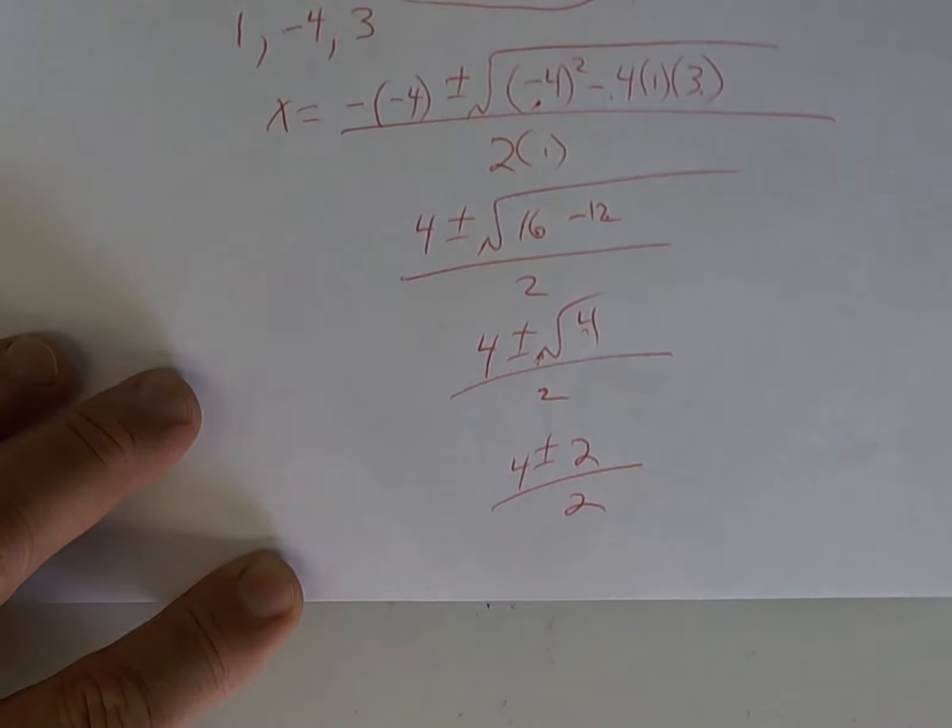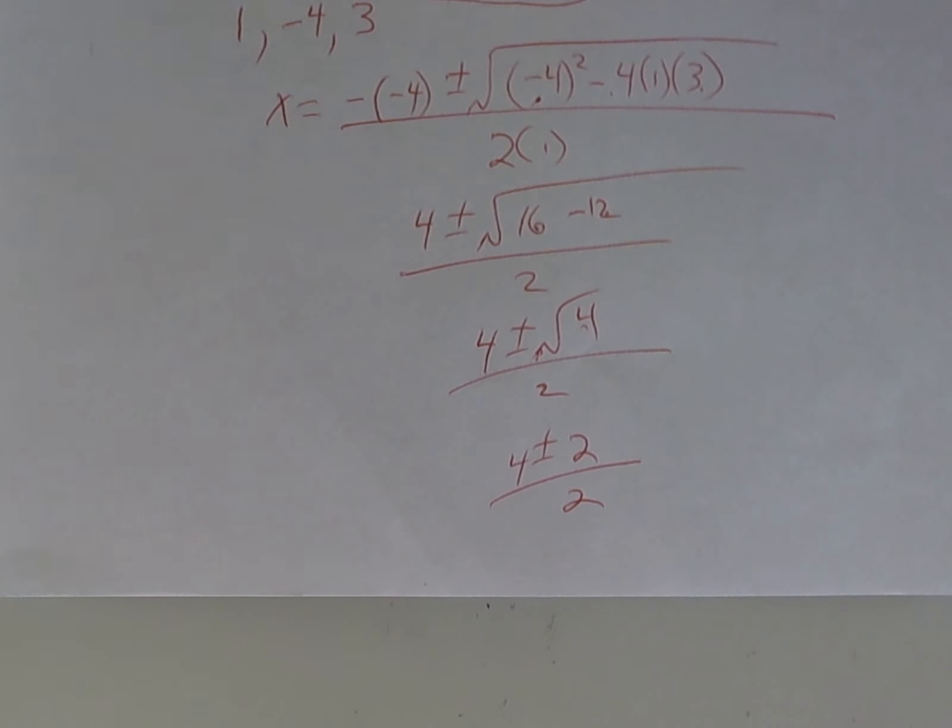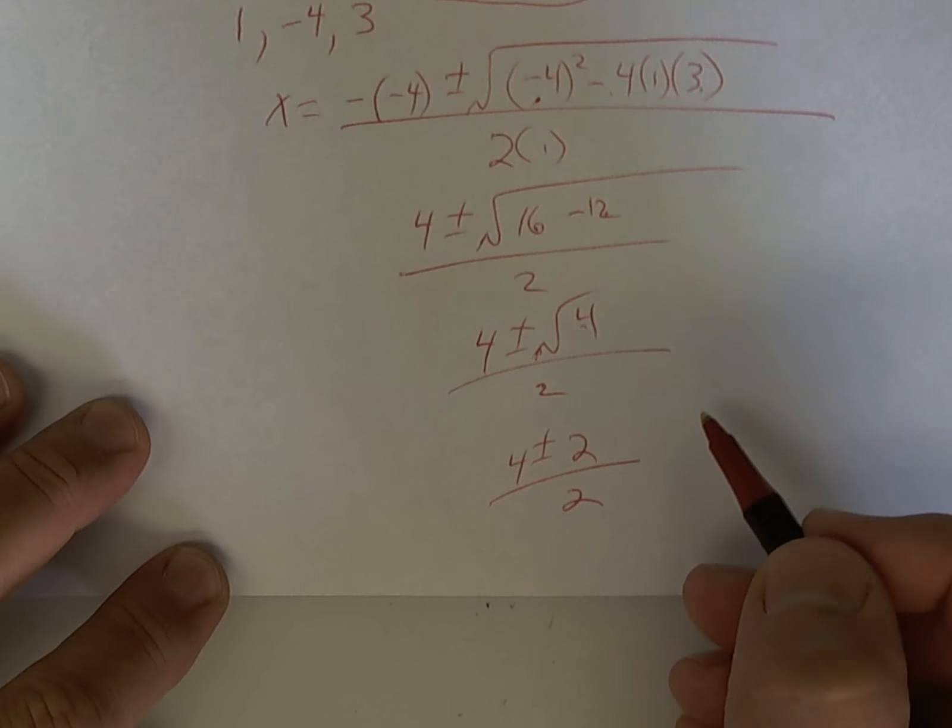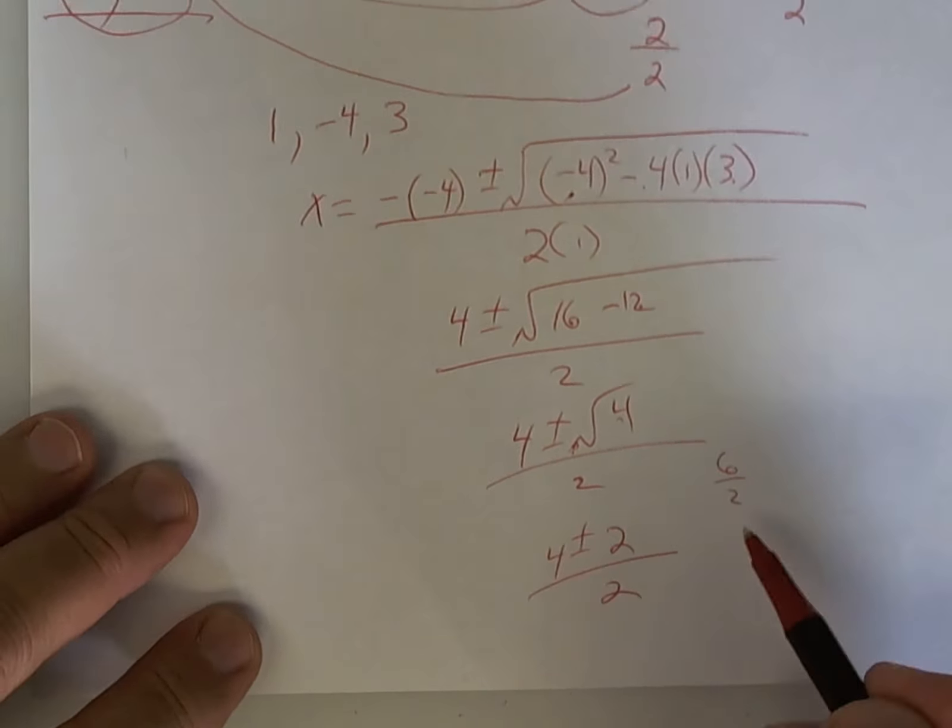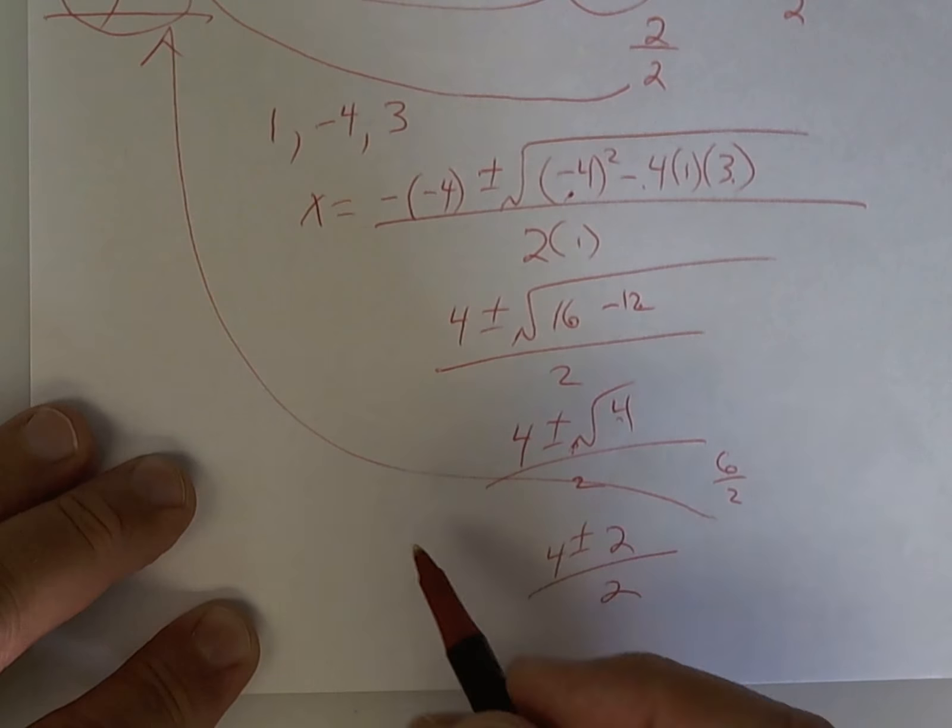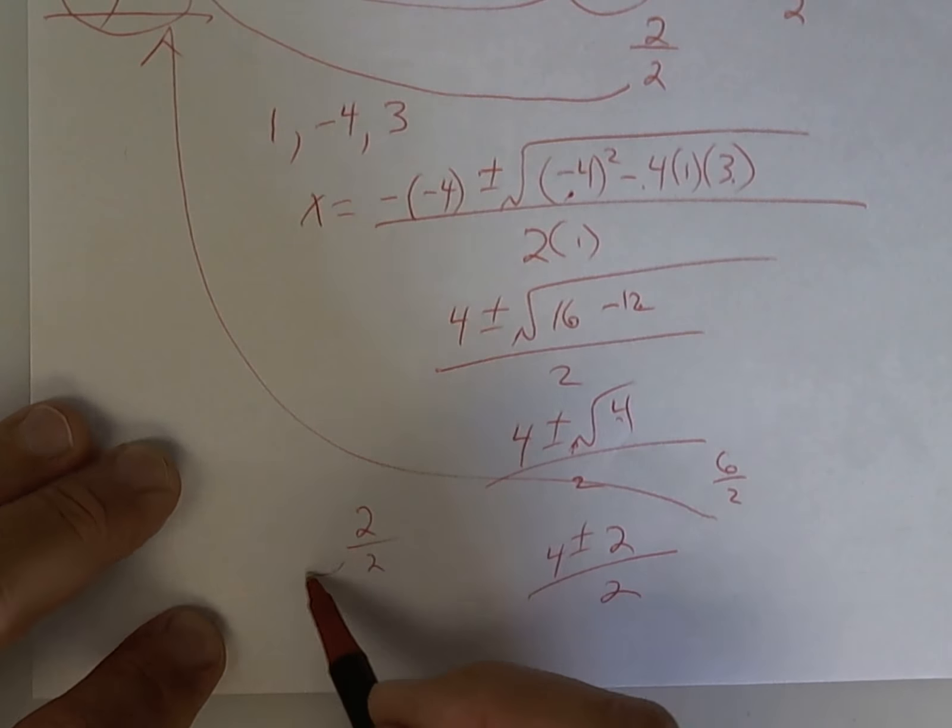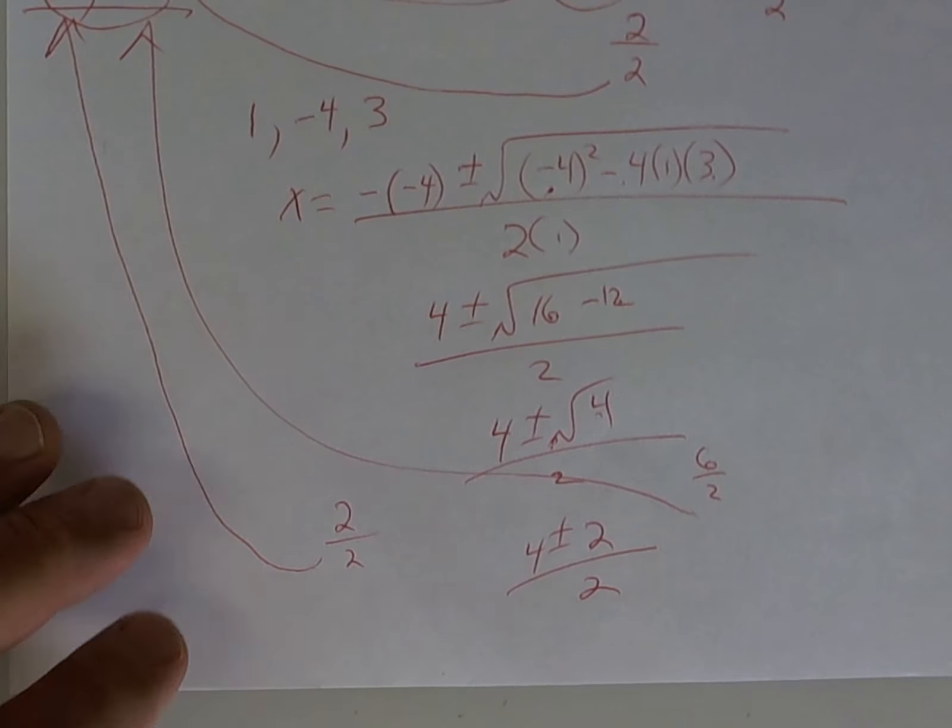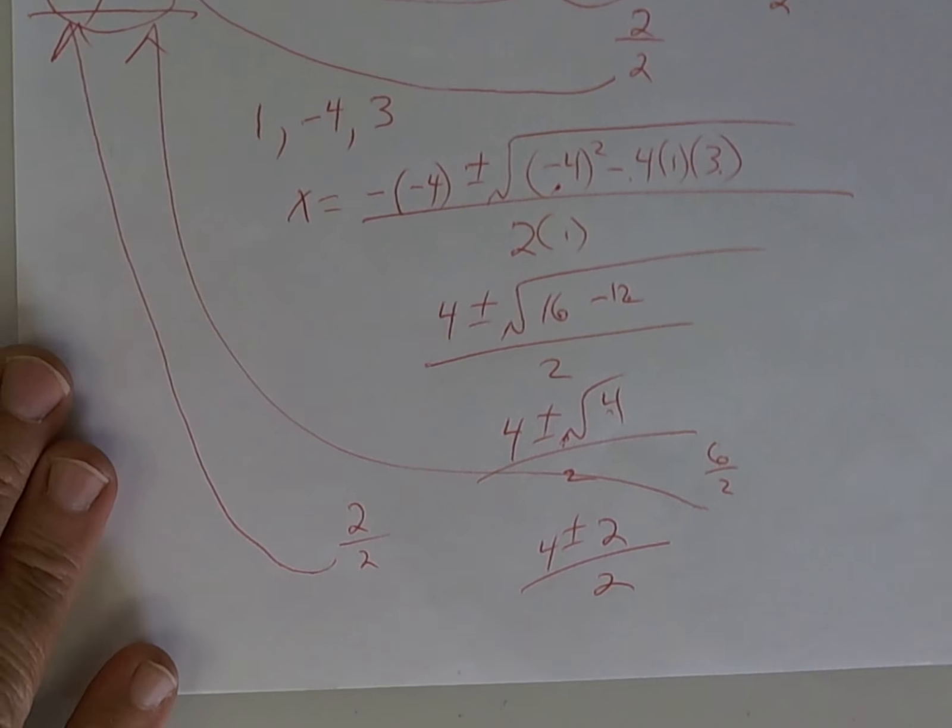Now, I'm going to do the plus. Four plus two is six, divided by two is the three. Four minus two is two, and two divided by two is one. And that's how we're going to do it.